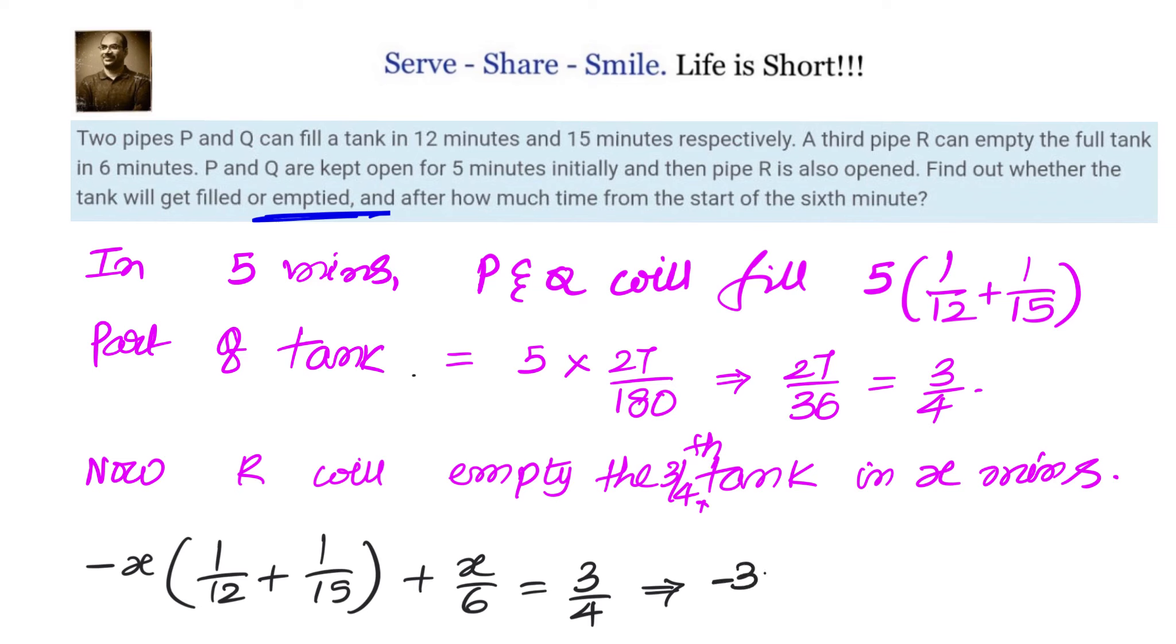So this whole thing should be equals to 3 fourths of the tank because P and Q in 5 minutes already filled the 3 fourths of the tank that we have to empty now. So that will become minus 3X by 20 plus X by 6 equals to 3 by 4. Let us take LCM and simplify that we will get X equals to 45 minutes.